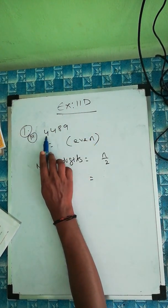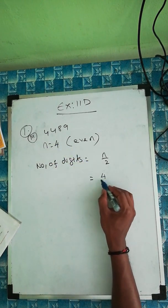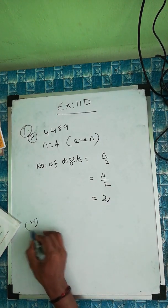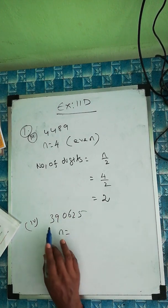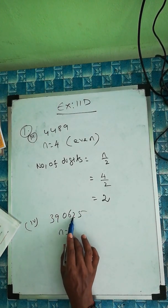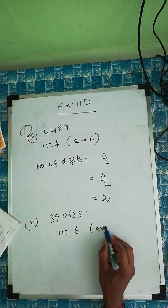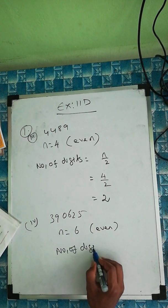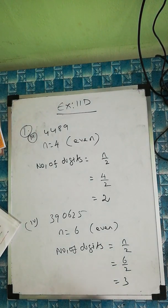For 4489, how many digits? One, two, three, four — four digits. Four is an even number, so the formula is n by two: four by two equals two. The number of digits is two. Question number four is 390625. How many digits? One, two, three, four, five, six — six digits. Six is even, so n by two: six by two equals three. The number of digits is three.